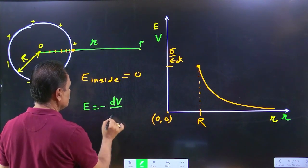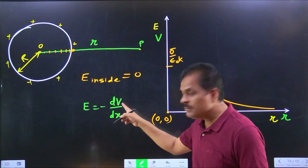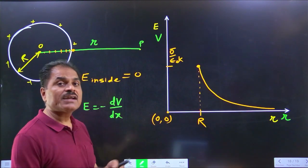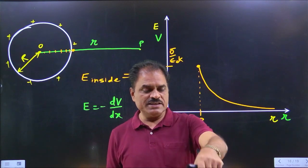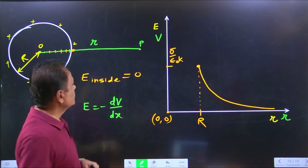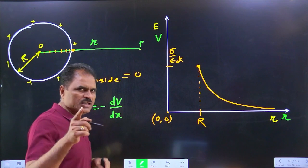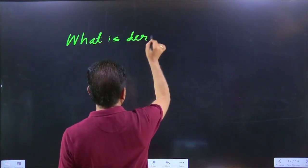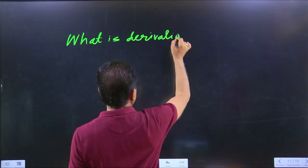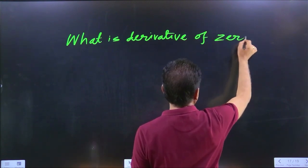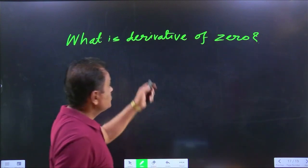In the case of a spherical conductor, using the negative potential gradient relationship, E = -dV/dx. Potential decreases in the direction of E. What is the derivative of zero? Derivative of zero is zero.